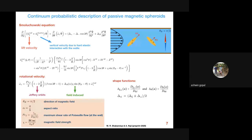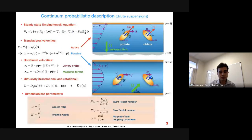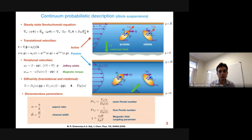Second question: How is the activity modeled in the Smoluchowski equation? For the active model, a simple translational velocity is used — because of the symmetry the convection by the flow is removed from the model, and only the swimming velocity with a certain direction enters the Smoluchowski equation. The rotational velocities are the same as for the passive case: one part due to Jeffrey orbits in the shear flow and the other due to the magnetic torque.